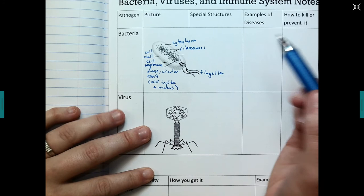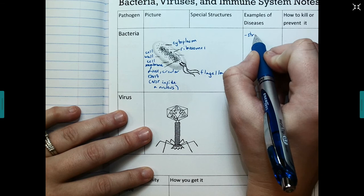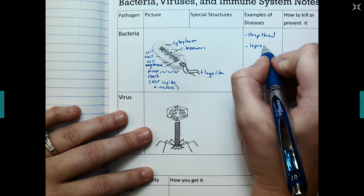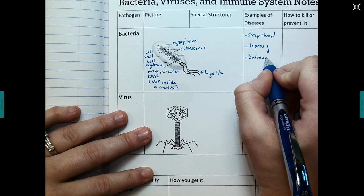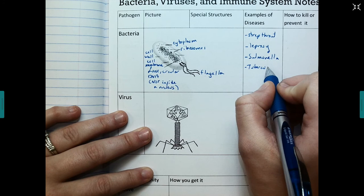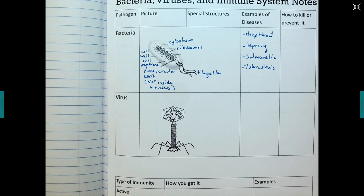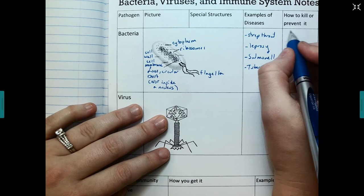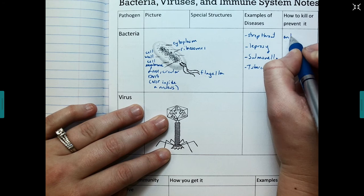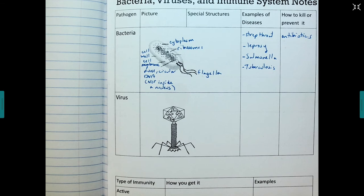Some examples of bacterial diseases would be strep throat, leprosy, salmonella, and tuberculosis. So because all of these are bacterial infections, that means that it can be treated with an antibiotic. Antibiotics.